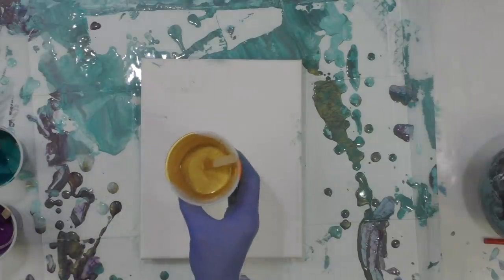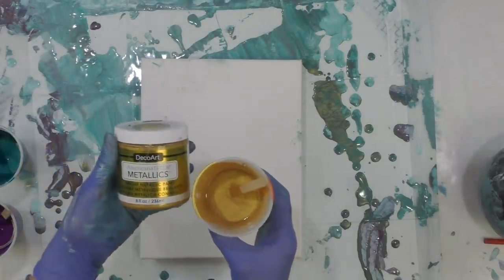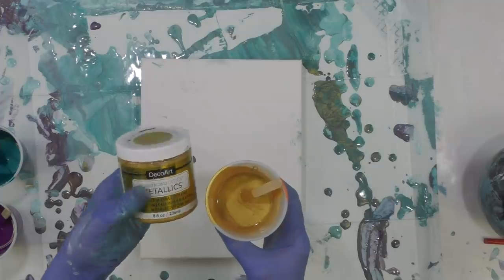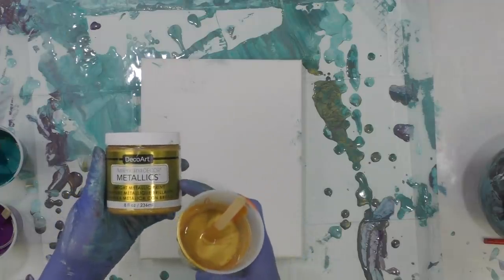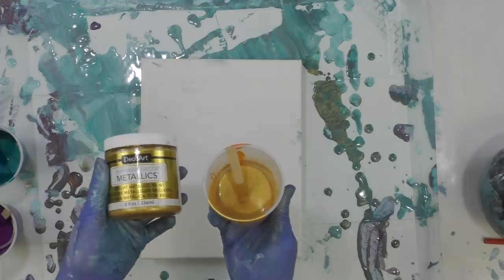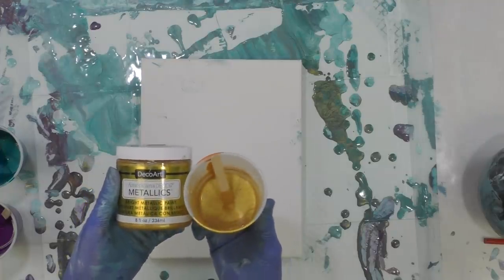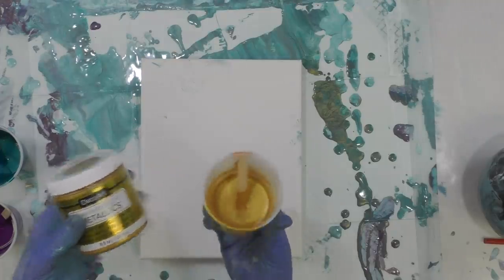This one is Deco Art's 24 karat gold. It's an Americana Decor and it comes in an 8 ounce container. I think it comes in the 2 ounce bottles as well, but you get your bang for your buck on this 8 ounce container, it's beautiful.